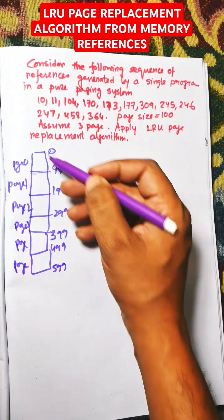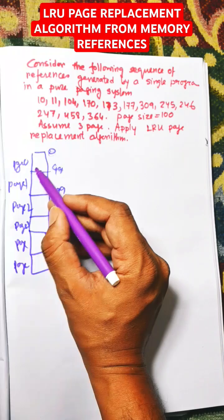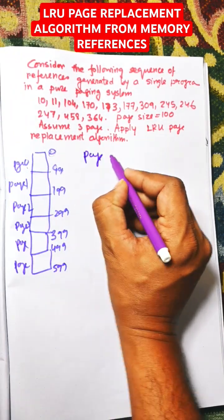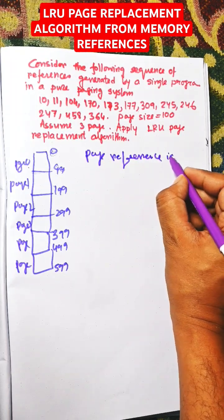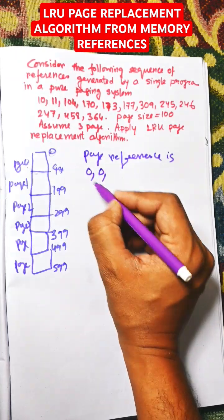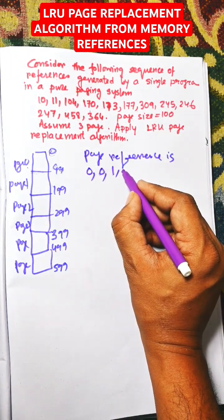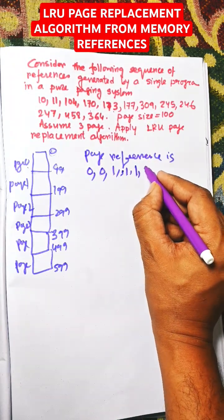First of all we need to draw the memory according to the page size 100. Now for address 10, the page will be page number 0, so page reference is 0. Address 10 is in page 0 and 11 is also in page 0. 104 is in page 1, 170 in page 1, 173 is also page 1, 177 is page 1.